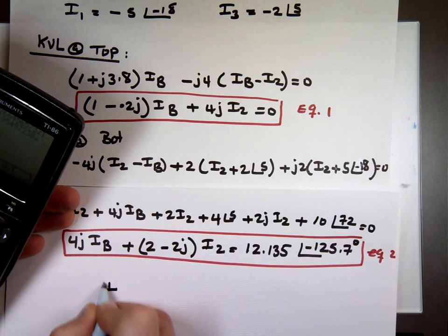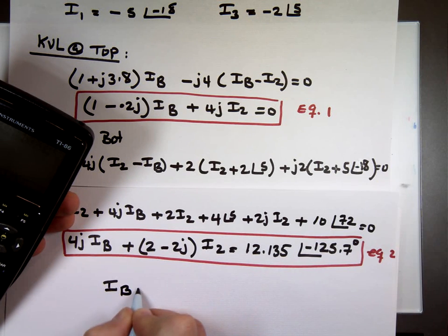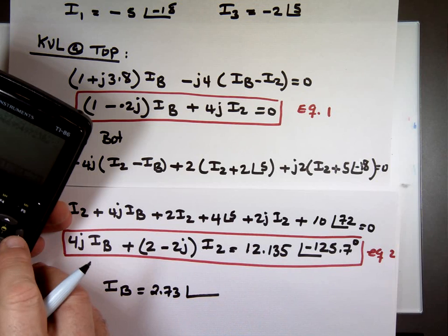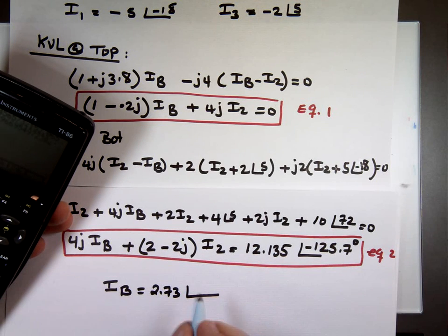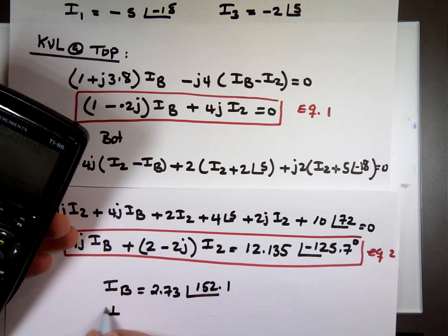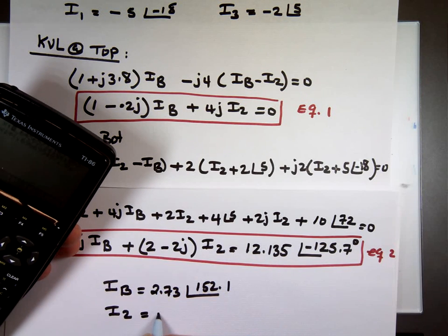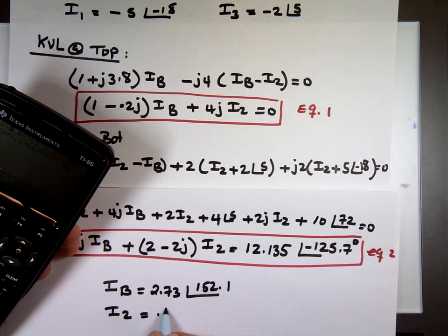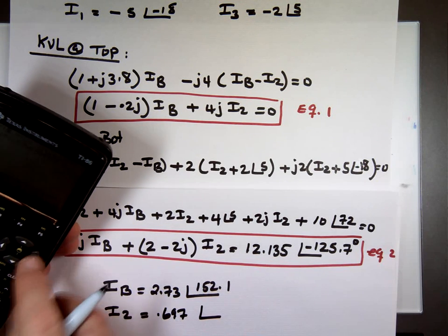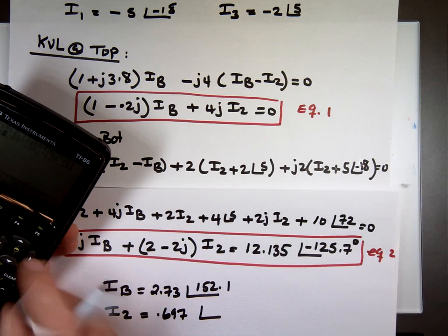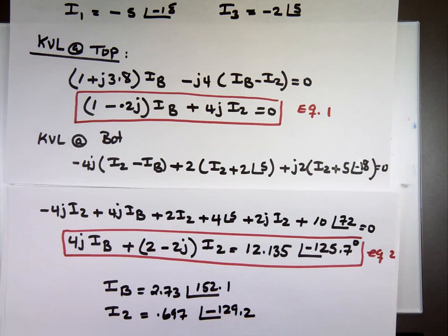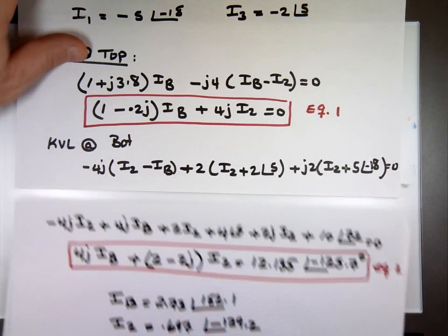Solve it. I have I sub B, which is the first one, is equal 2.73 angle 152.1. And the other one, I sub 2 now, equals 6.97 angle negative 129.2. Didn't take that long.